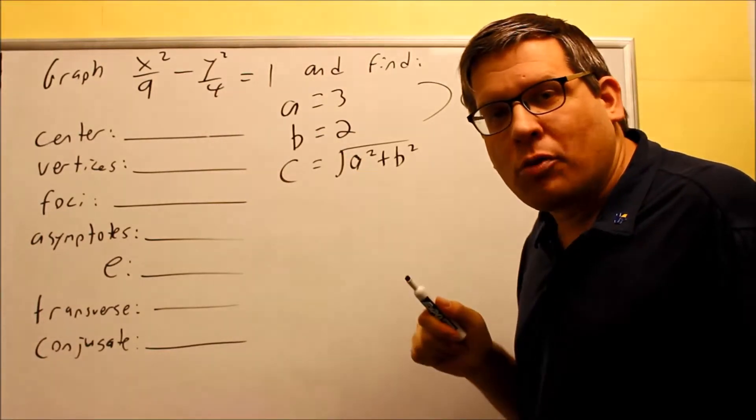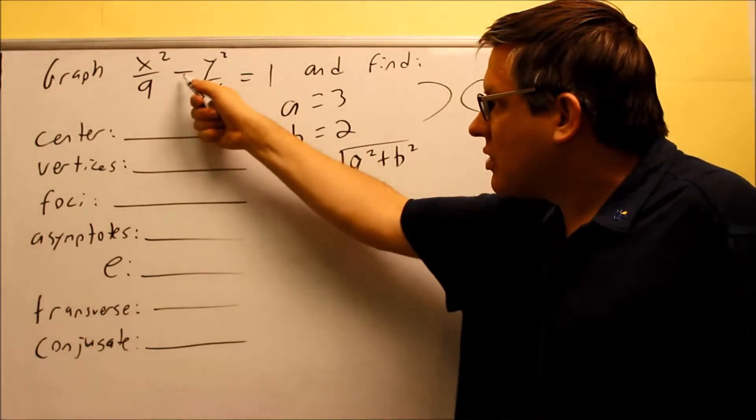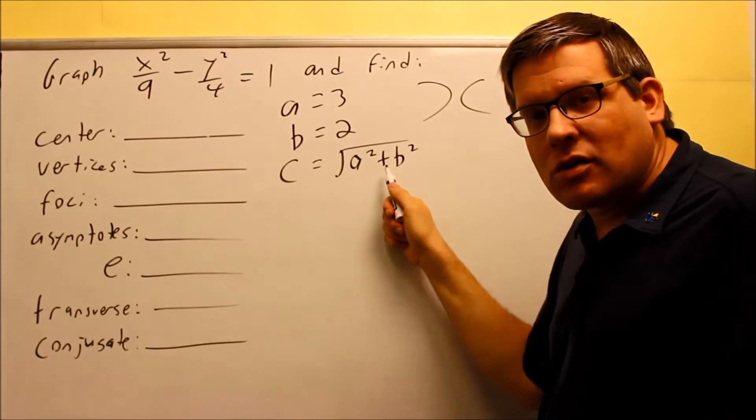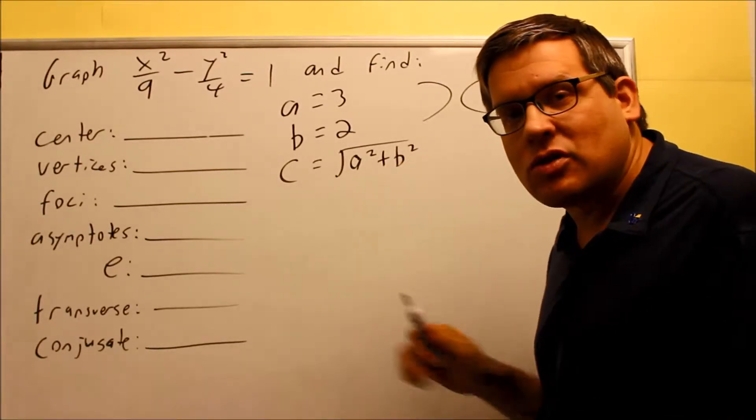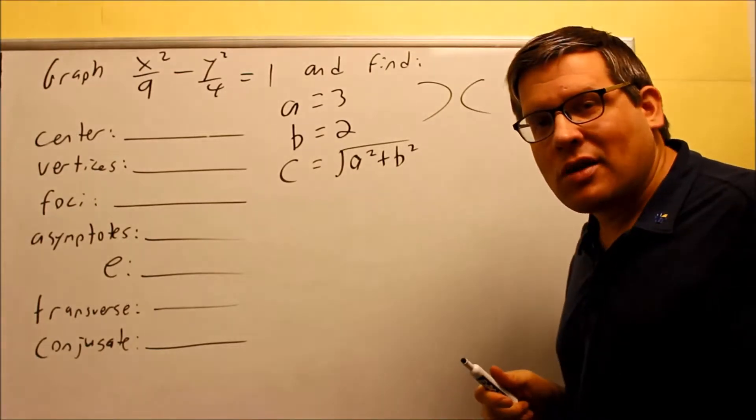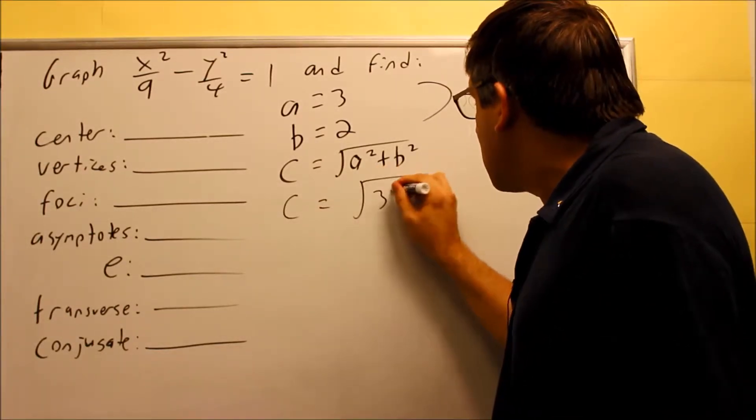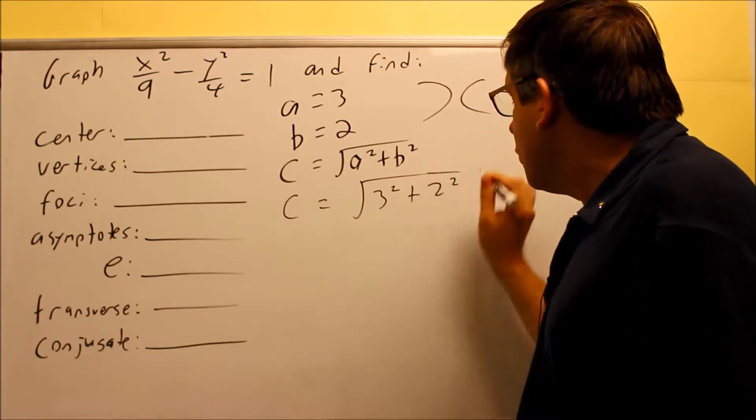In this case for hyperbolas, because it's a minus sign, this has to be a plus. We're going to put our information in here and we get square root of three squared plus two squared, and that's nine plus four. You get the square root of thirteen as a result.